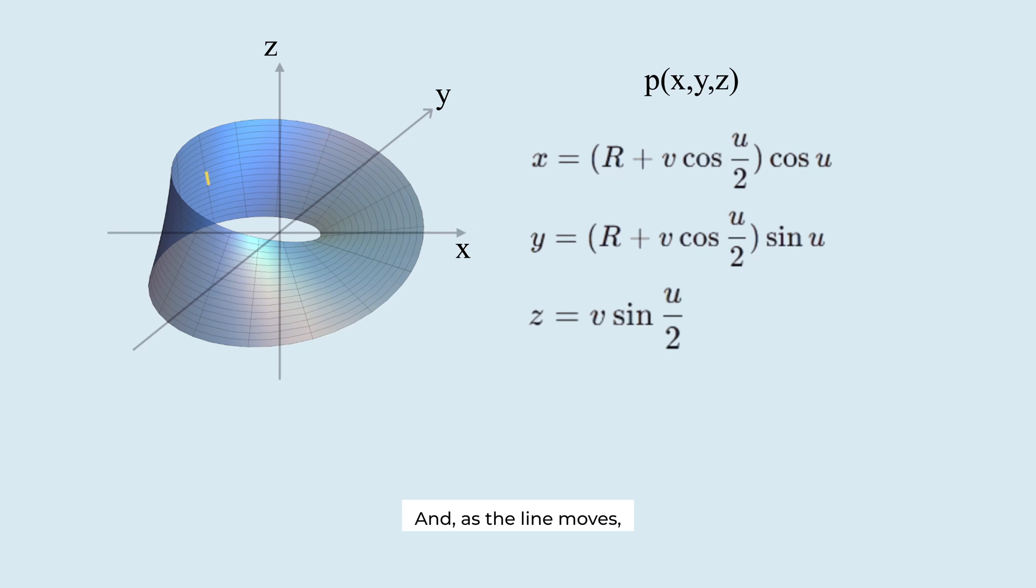And as the line moves, the z value does not change its sign. It starts from 0, reaches a maximum positive value, then returns to 0. Or it starts from 0, reaches a minimum negative value, then returns to 0. To express this transformation, we use sin(u/2).